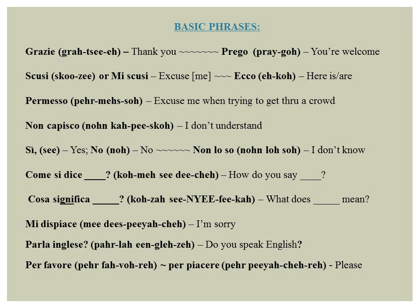Non capisco means I don't understand. Sì is yes and no is no. Non lo so means I don't know. If you want to know the Italian word for something, you can simply point to it and say Come si dice? — which means what do you call or how do you say? If you are speaking to someone who understands English, you can insert the English word for which you want the Italian equivalent.